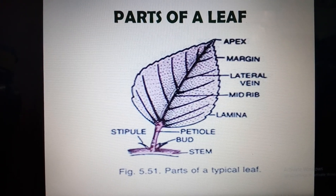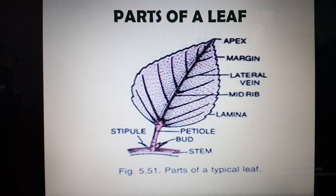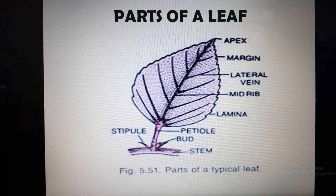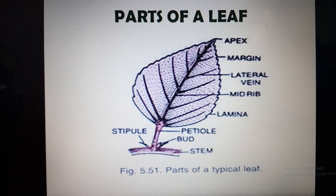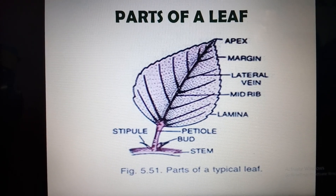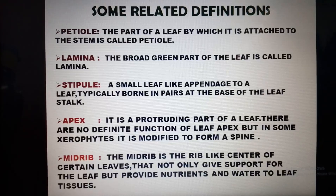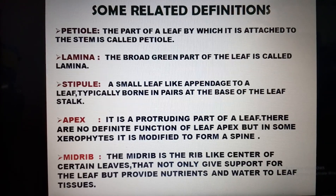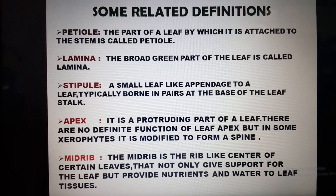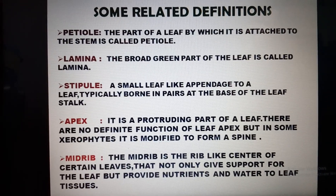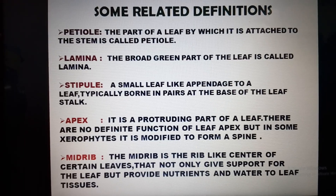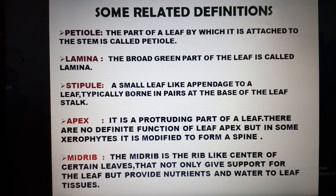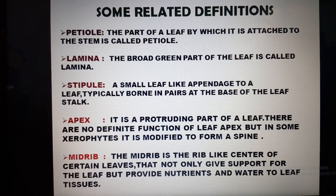The petiole is the part which is present at the bottom, and through this part the entire leaf is connected to the stem. So it is the part of a leaf by which it is attached to the stem — that is called the petiole.